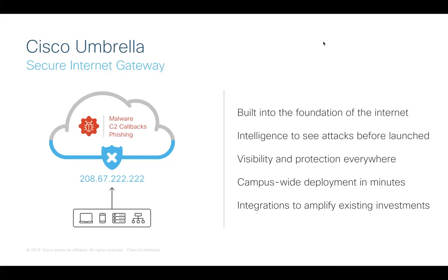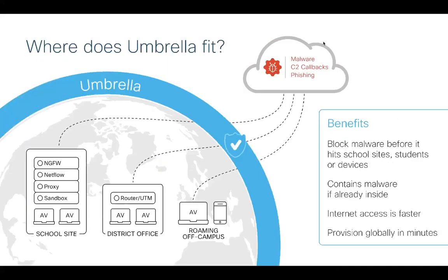Let's look at where Umbrella fits within your environment. You probably have a range of products already deployed, and because there are many ways malware can get in, it's important to have multiple layers of security. Umbrella provides the first line of defense so you can block malware before it hits school sites or devices, contain malware if it's already hit your network, provide even faster internet access, and provision globally in just minutes.